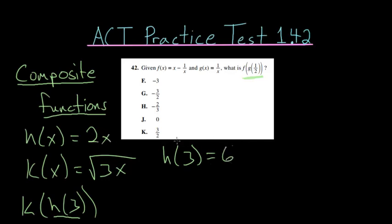And then you can take this value for h of 3, which we know is 6, and replace it here. So now we have k of 6 since we just replaced the h of 3 by 6.